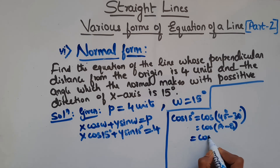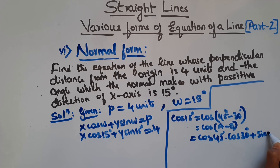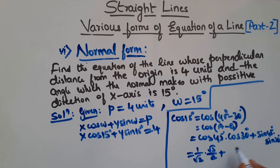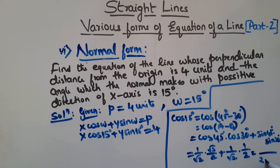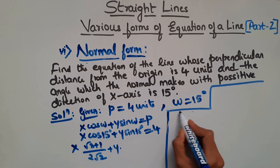So x cos 15 plus y sin 15 equals 4. First let us find cos 15 degrees. Cos 15 can be written as cos(45 minus 30). This is of the form cos(a minus b), and the formula is cos a cos b plus sin a sin b. So cos 45 times cos 30 plus sin 45 times sin 30 equals (1/root 2)(root 3/2) plus (1/root 2)(1/2). In the denominator we have 2 root 2, and in the numerator we have root 3 plus 1. So cos 15 equals (root 3 plus 1)/(2 root 2).